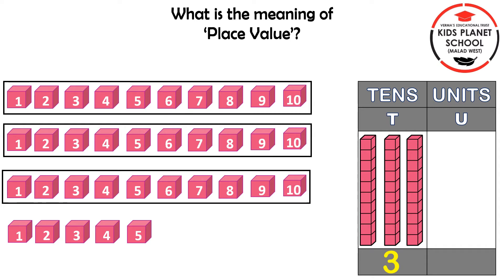Now, as there are 5 units of blocks remaining, we will move them to the units column. So children, in the units column, how many blocks are there? Yes, 5 blocks. Here, we have got the number 35, in which there are 3 tens and 5 units.